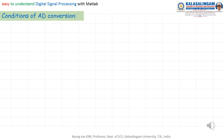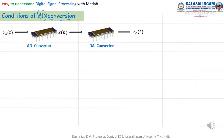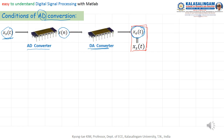Then what is the condition of the AD conversion? The original signal X of t is a continuous time signal. Through the AD converter, we can get X of n. This digital signal goes to the DA converter, and at the final output, we can get X of t again. Theoretically, the output continuous time signal should equal the input. That means, even though the signal passed through these converters, it should be the same — theoretically, not practically.